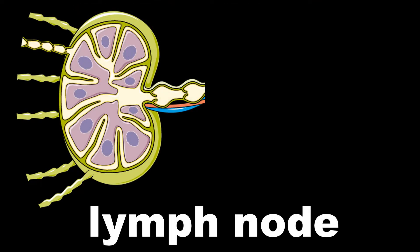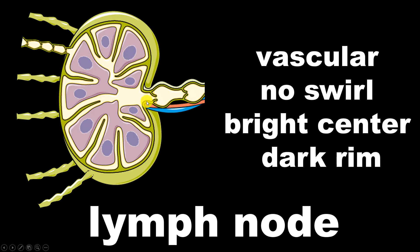Some features of the lymph node: one, they're vascular structures, and using color Doppler you're able to see those two little vessels. Two, they won't have that swirl when you compress on them, like we saw with abscesses. Three, they often have a bright center. Four, they often have a darker rim. Absolutely do not cut into this, and be especially wary when ultrasounding in a region where lymphadenopathy is possible, such as in the groin, axilla, or neck.